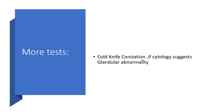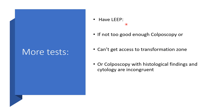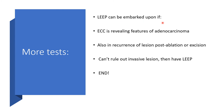Cold knife conization can be done if cytology suggests glandular abnormality. Loop electrosurgical excision procedure (LEEP) is indicated if colposcopy is inadequate, the transformation zone is inaccessible, or colposcopy with histological findings and cytology are incongruent. LEEP is also used if endocervical curettage reveals features of adenocarcinoma, in recurrence of lesion post-ablation or excision, or if invasive lesion cannot be ruled out.